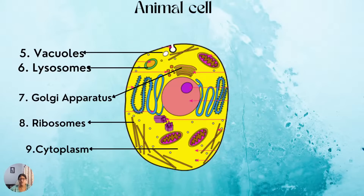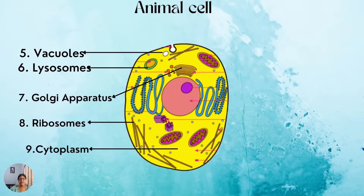What about the ribosomes? They are small organelles made up of RNA-rich cytoplasmic granules and they are the sites of protein synthesis. A very important part of the entire cell structure is the cytoplasm — a jelly-like material which contains all the cell organelles enclosed within the cell membrane.